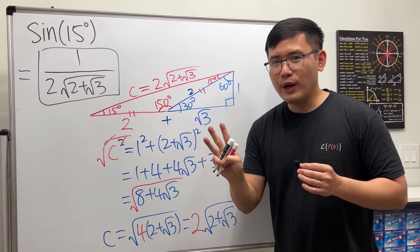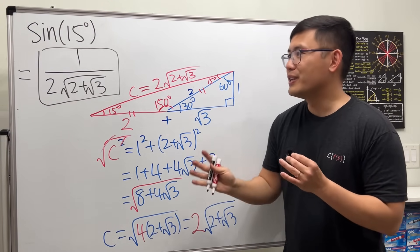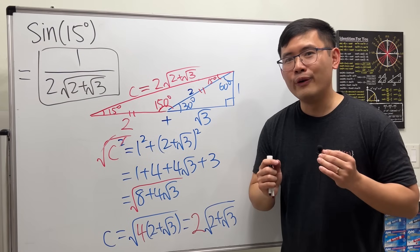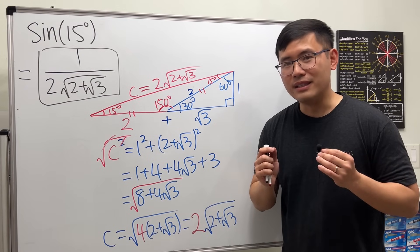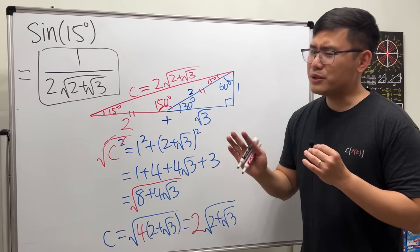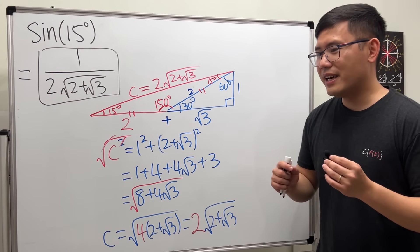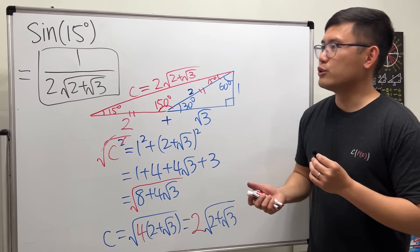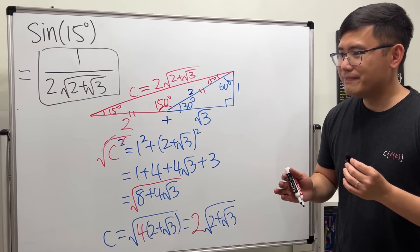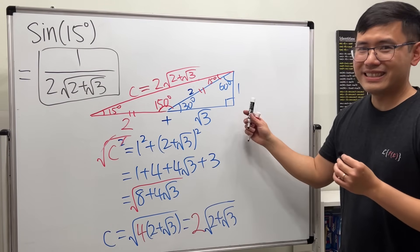So three different methods give three different-looking answers, but they are all the same value. Try to prove that all three expressions are equal, and then you can wait for my next video where I'll show you why. That's it!